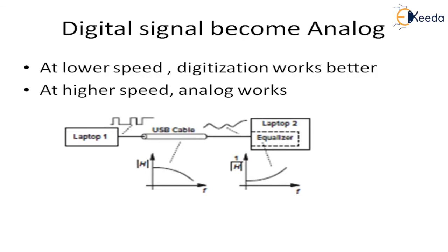So we always need an analog processor or analog design even in digital design. At lower speeds, digital signal processing works efficiently, while at higher speeds, the analog domain works better. So we implement functions in the analog domain in many electronic devices. Analog circuits are typically far less complex compared to digital circuits. For example, an ADC may require thousands of transistors, whereas a microprocessor requires billions of transistors.